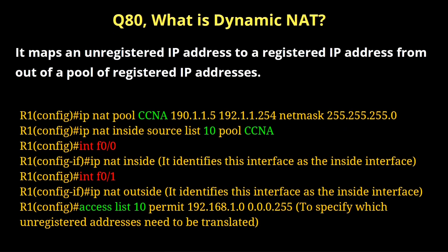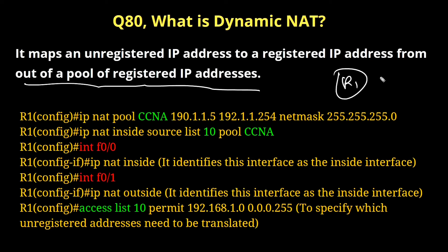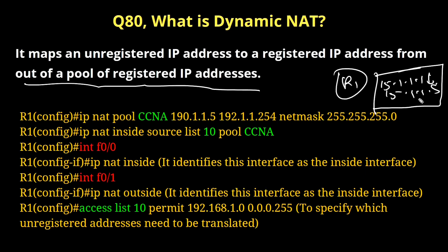Question number 78: what is dynamic NAT? Dynamic NAT maps unregistered IP addresses to a registered IP address from a pool of registered IP addresses. In dynamic NAT, you configure a pool of public IP addresses. For example, in the pool I will configure IP addresses 15.1.1.1 to 15.1.1.5 — so there are 5 public IP addresses.